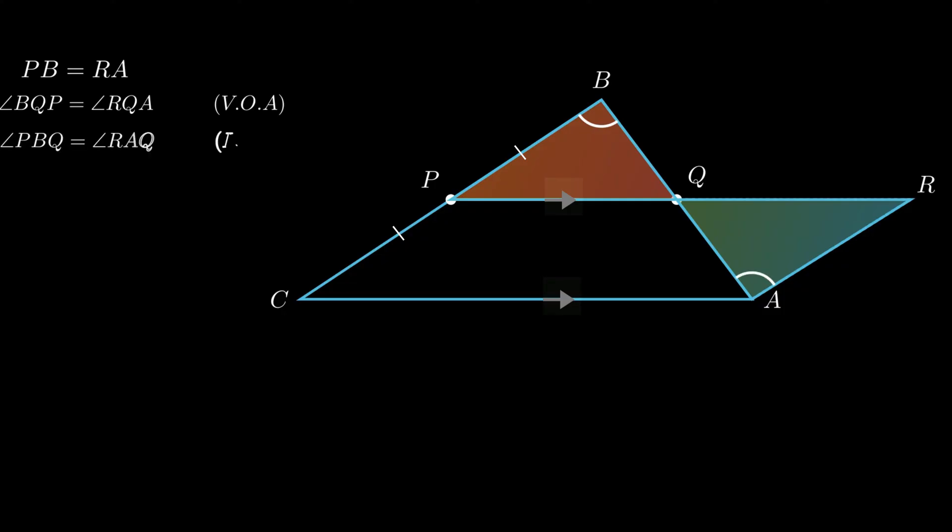Therefore by SAA rule, triangle PBQ is congruent to triangle AQR. By corresponding parts of congruent triangles we conclude segment BQ is equal to segment QA, hence point Q is proved as the midpoint of side AB.